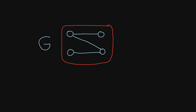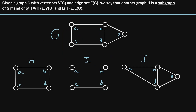Now that we've given that quick introductory example, let's give a more formal definition of a subgraph. We say that given a graph G with a vertex set V(G) and edge set E(G), another graph H is a subgraph of G if and only if the vertex set of H is a subset of the vertex set of G, and the edge set of H is a subset of the edge set of G. Simply put, all of the edges and all of the vertices of H must belong to the vertex set and edge set of the original graph G.